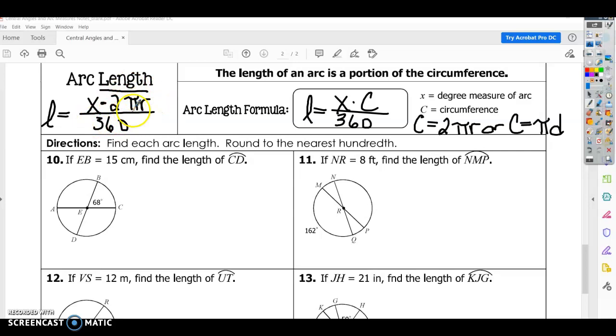I just want to put this in here because it makes it a little bit more straightforward when you're looking at a problem. All right, let's look at some examples. Find each arc length round to the nearest hundredth. If EB is 15 centimeters, find the length of CD, so we're looking for the length, not the measure, the length of that arc.